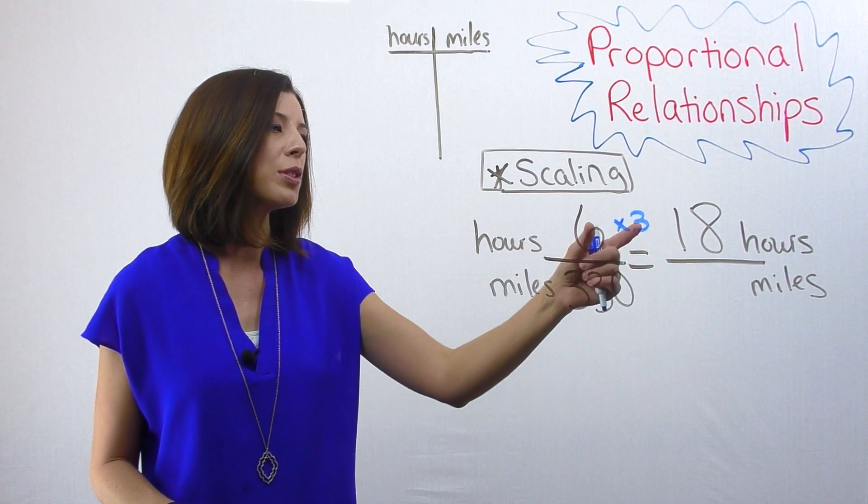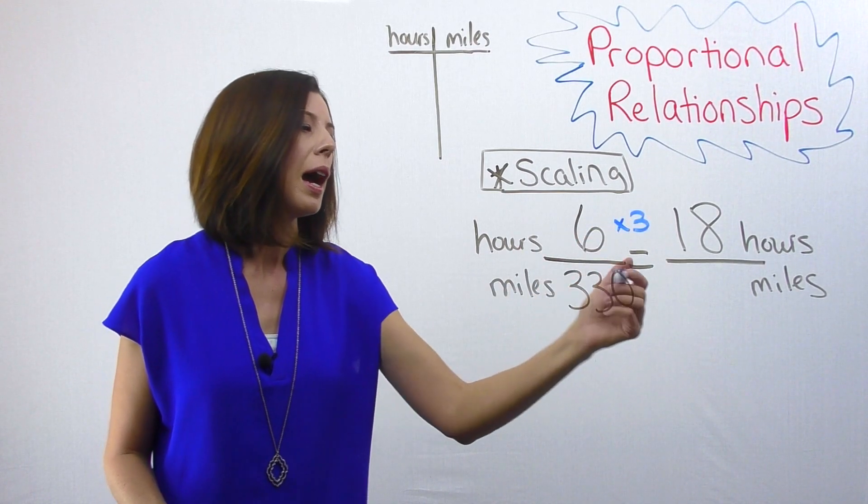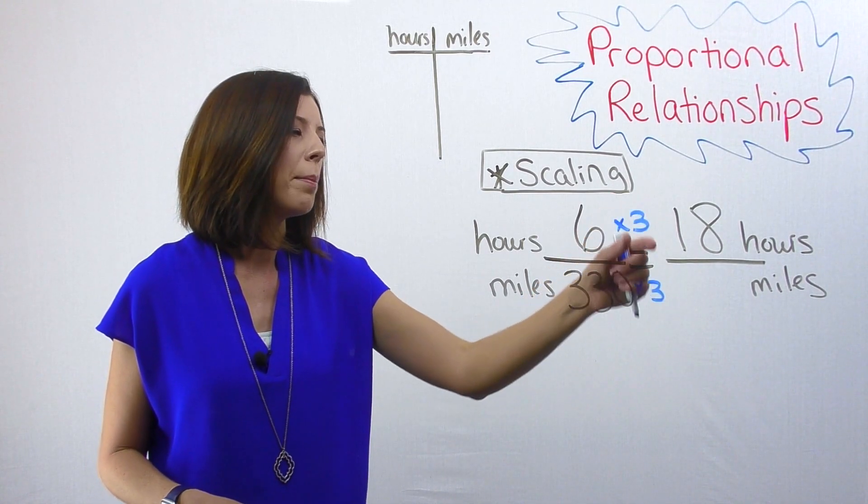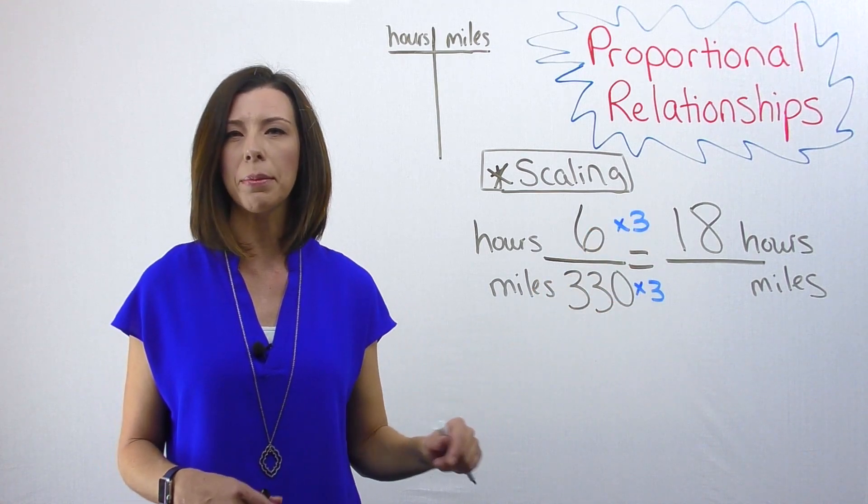I know that because I have multiplied the numerator times three, I must also multiply the denominator times three. I'm needing to make sure that I'm multiplying both of these by the same number because really, I know that three over three reduces to one.